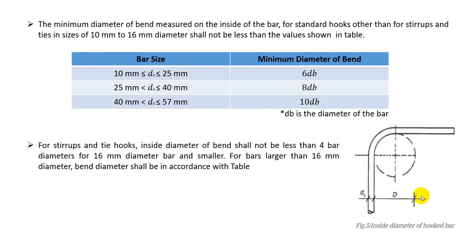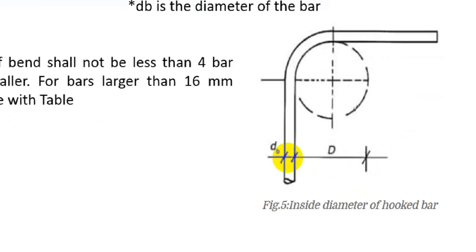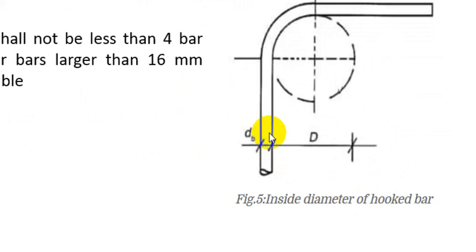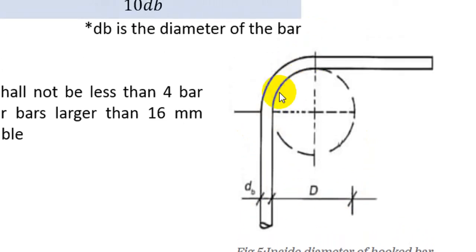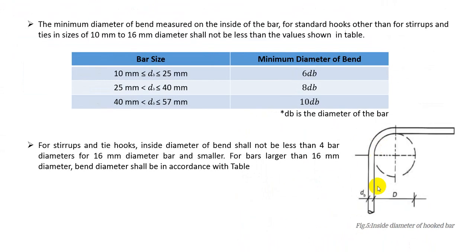So from here, if we see the figure, here you are showing that this is the bar diameter. Here, dB, bar diameter, and here d means the total diameter. Total d means this is the total diameter of band, total diameter of the band here. So this will be the diameter of the band. And in this way, we can use our band according to our design code.